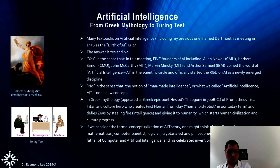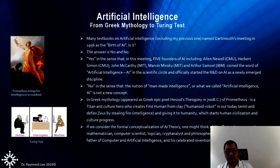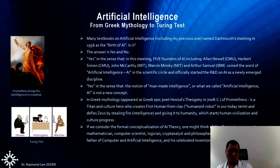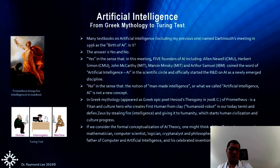The Turing test is an interesting game. We have an interrogator — the examiner — and three rooms, all separate. The examiner is in the center room, with a human on one end and a machine or program on the other end. They are connected to the examiner via monitor and keyboard. The game is simple: within a period of about 20 to 25 minutes, the examiner can ask these two parties anything by typing on the keyboard.